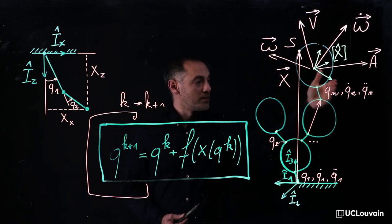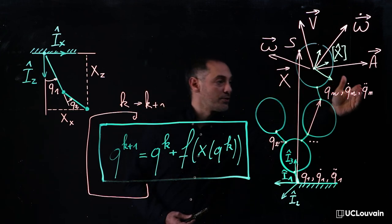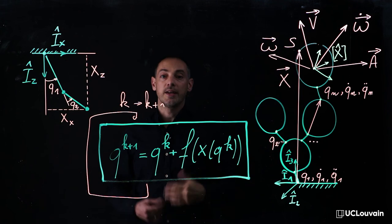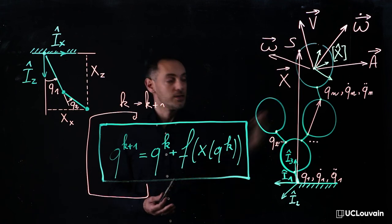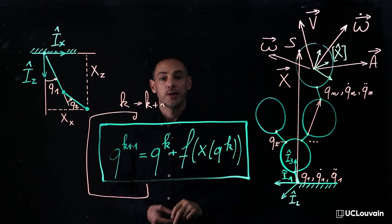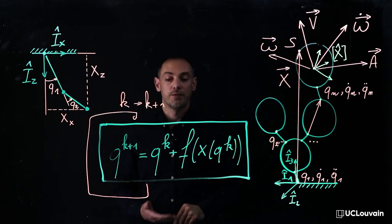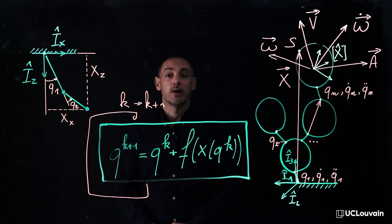For the velocities, q dot, and the accelerations, q dot dot, the inverse kinematics, being linear with respect to these quantities, their computation can be directly performed via linear algebra methods.